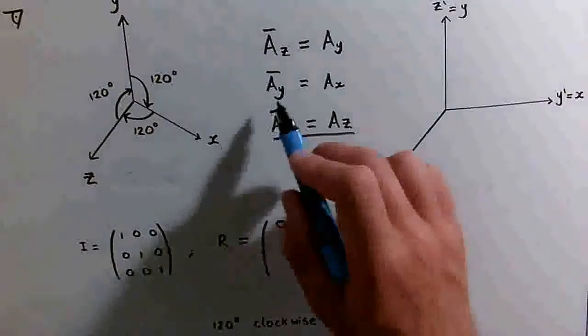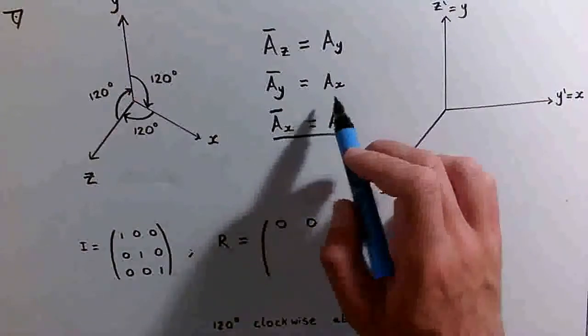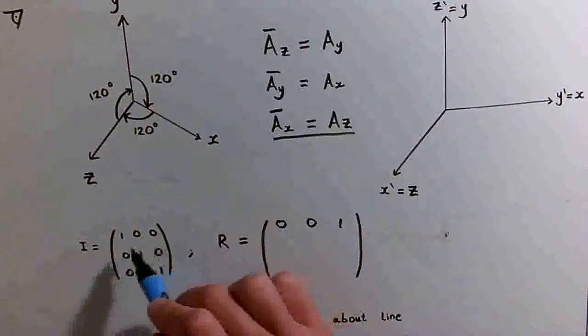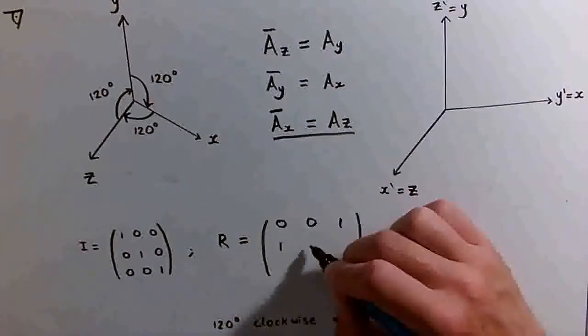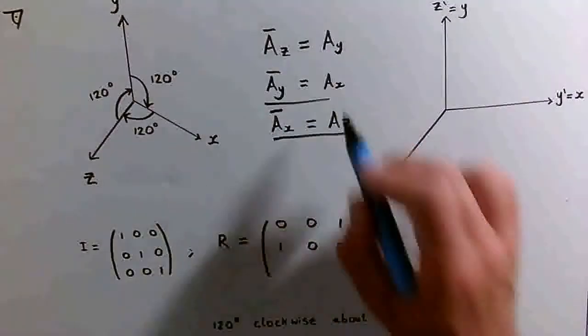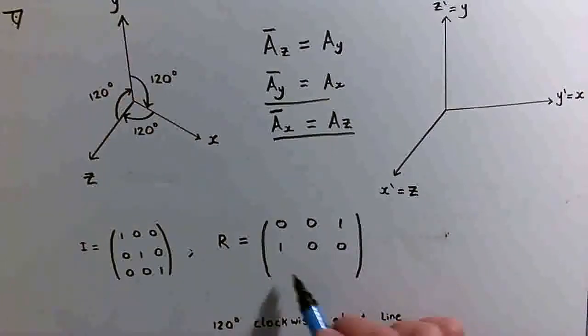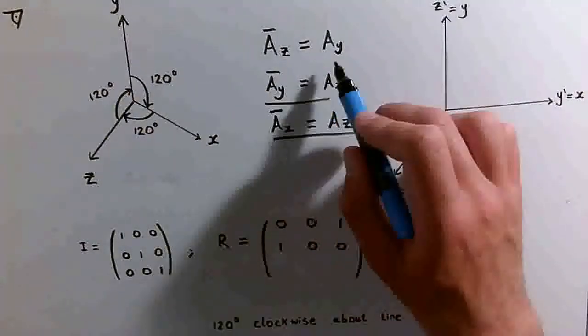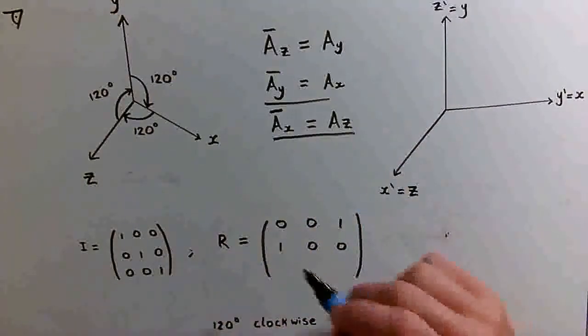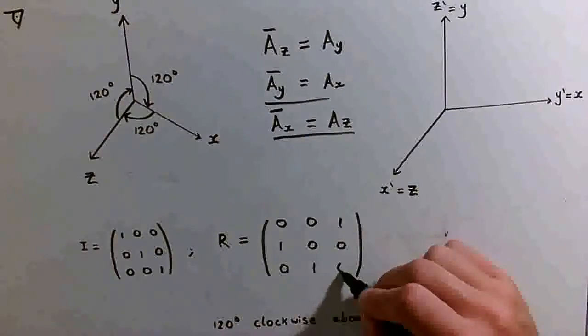The second row, the modified y coordinate, is the same as the original x coordinate, so the second row is 1, 0, 0 from the first row of the identity matrix. The third row, the modified z coordinate, is the same as the original y coordinate, so the second row of the identity matrix is our third row here: 0, 1, 0.